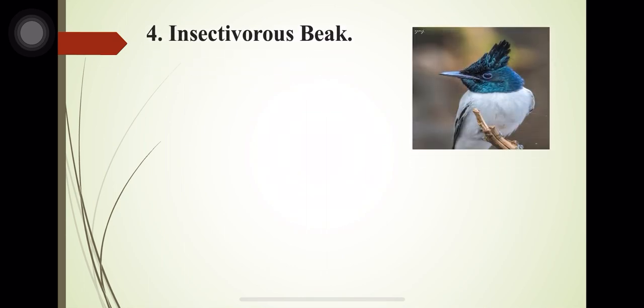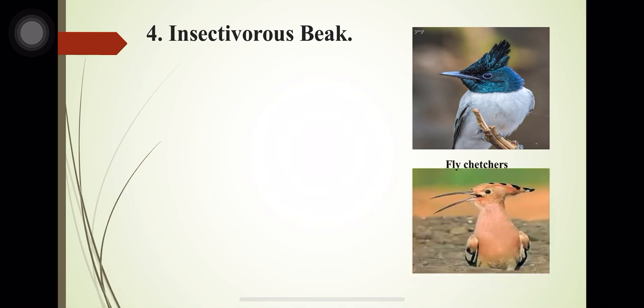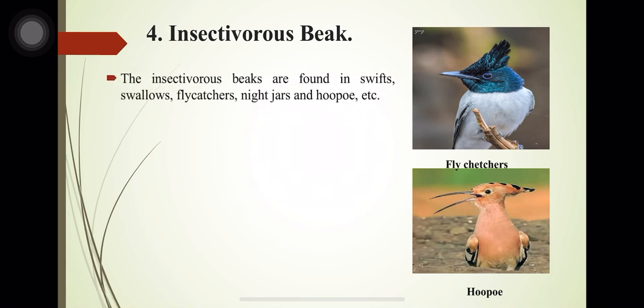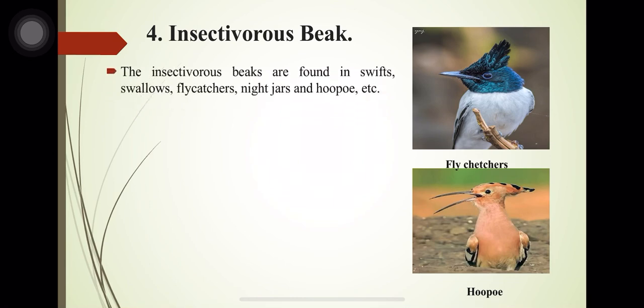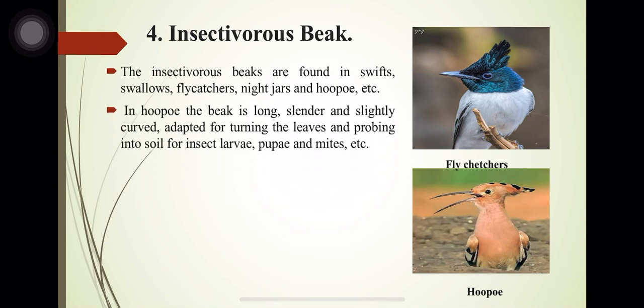The insectivorous beak is found in swifts, swallows, flycatchers, nightjars, and hoopoes. In the hoopoe, the beak is long, slender and slightly curved, adapted for turning leaves and probing into soil for insect larvae, pupae and mites.